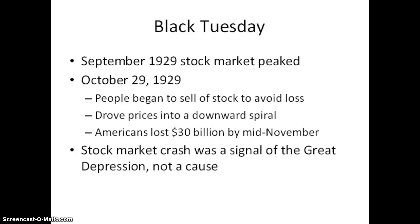In September of 1929, the stock market peaked and began to decline. On October 29, 1929, people began to sell off their stock to avoid a loss. This drove prices into a downward spiral, and Americans lost $30 billion by mid-November. The stock market crash was a signal of the Great Depression, not necessarily a cause.